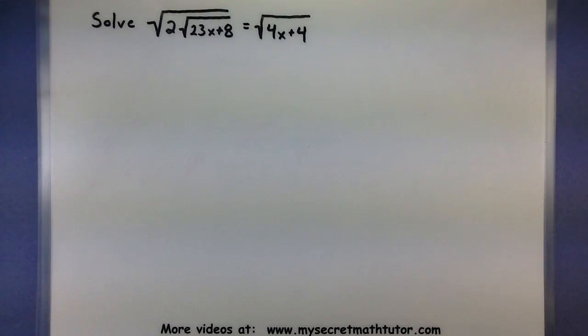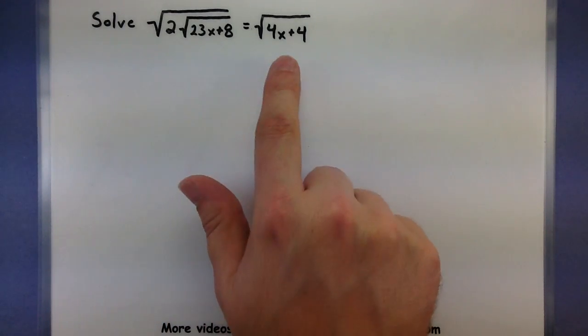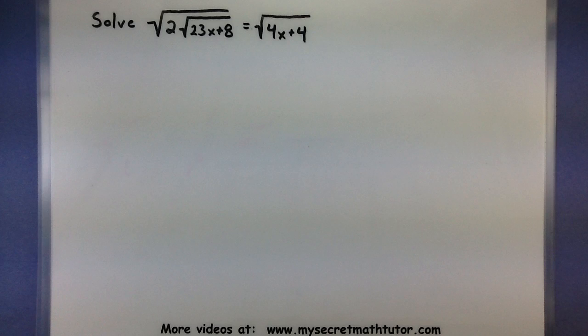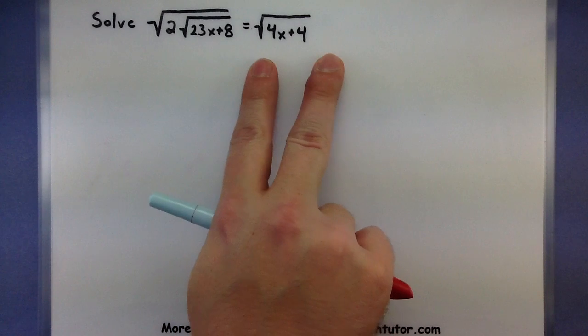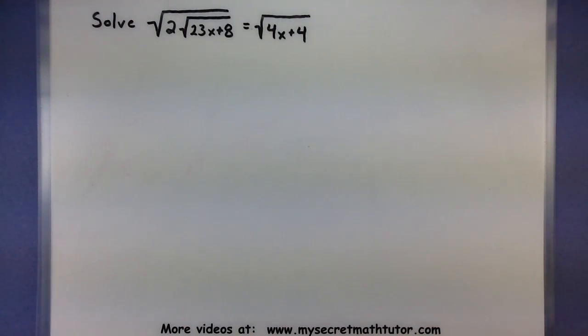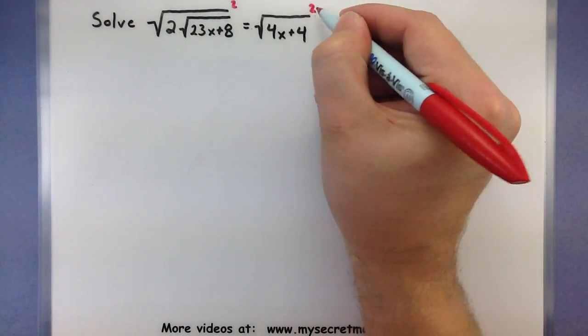In the first one, I want to solve the square root of 2 multiplied by the square root of 23x plus 8 is all equal to the square root of 4x plus 4. So over here on the left side, we have roots inside of roots, and I even have another one over here. To start off this process, I want to start isolating roots. This root is isolated, and so is this one. So if I square both sides right now, it'll actually get rid of two of my roots. Let's square the left and square the right.